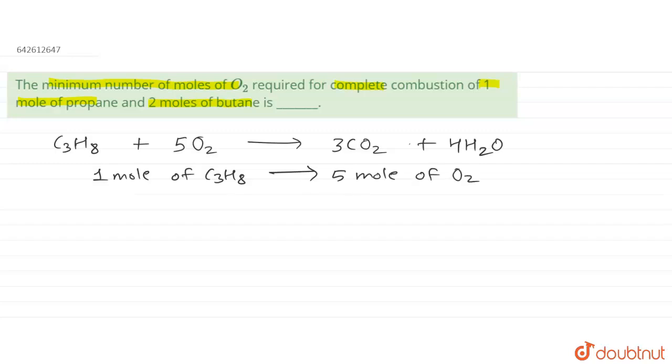Similarly, now we'll write the combustion reaction for butane. This was for propane. Now similarly we have to write for butane also. For butane, it is having four carbon, so C4H10 reacting in presence of air, which is O2, and it reacts to give you CO2 and water.